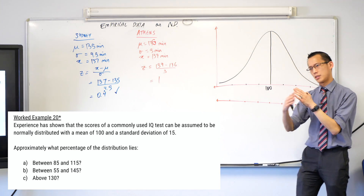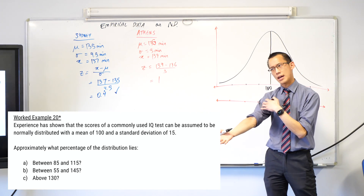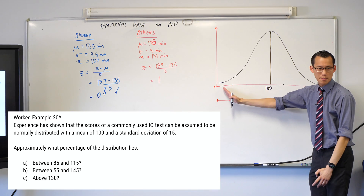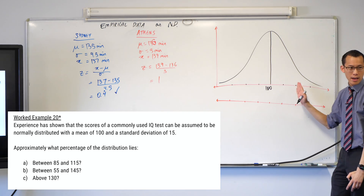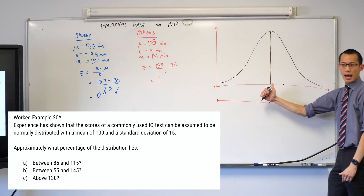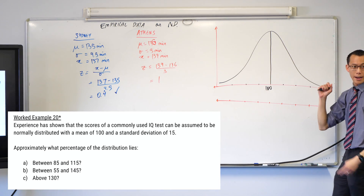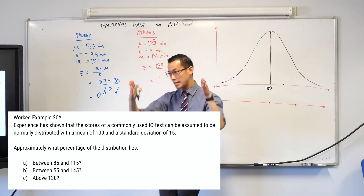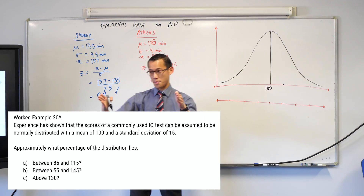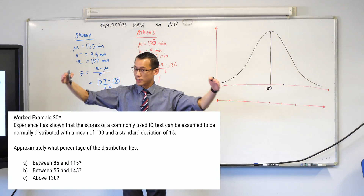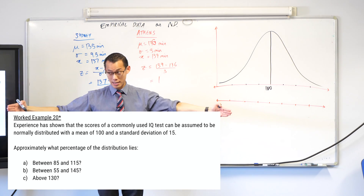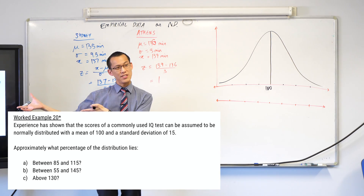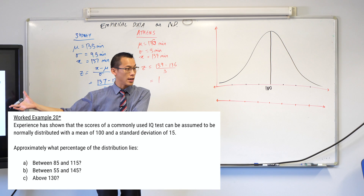If you think back to the diagrams we gave you earlier this week about the normal distribution, you can see there are markings — exactly three going this way and three going that way. Each one represents going out one standard deviation from the mean, then another standard deviation, then another. Now I actually know what the standard deviation is — it's 15.